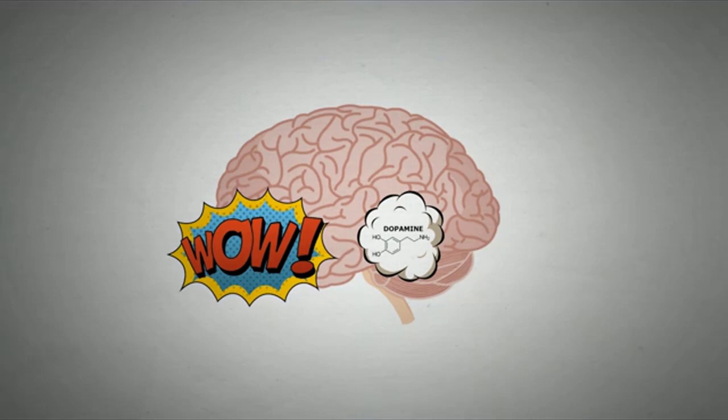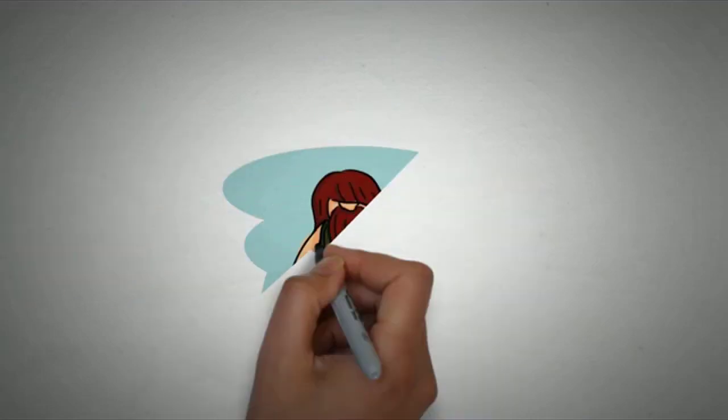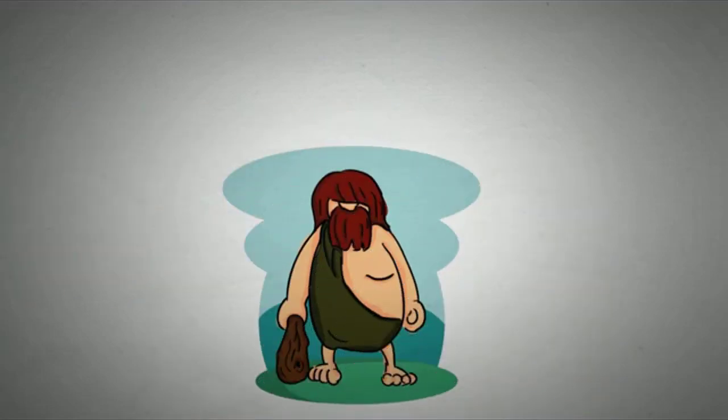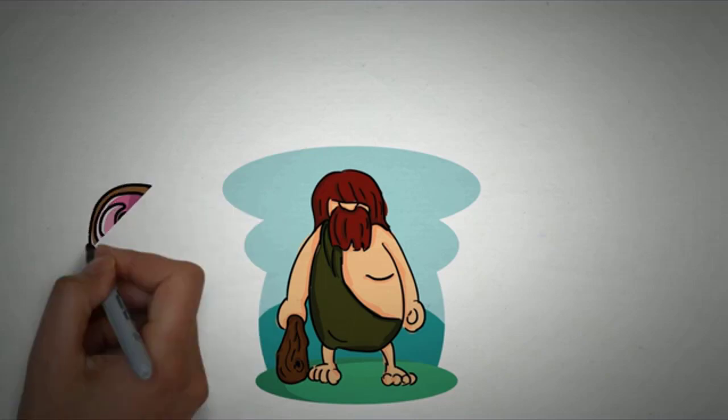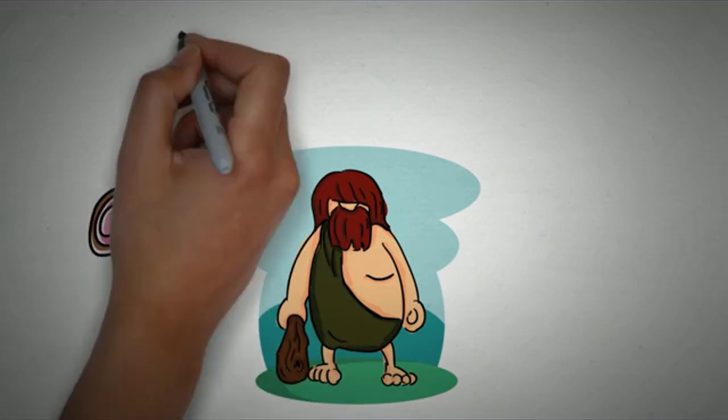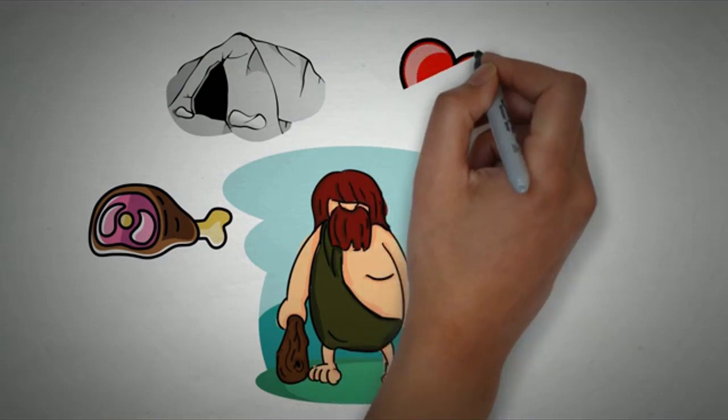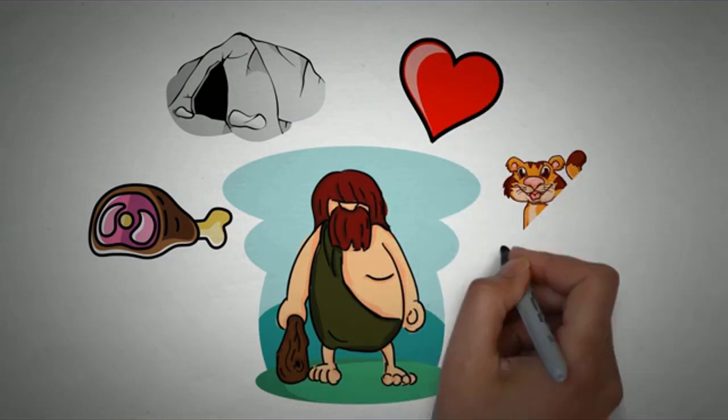Back in the primitive days, our brains would have been bursting with dopamine when we found and ate food, found shelter, had sex, and ran away from the saber-toothed tiger. All things that helped us survive.